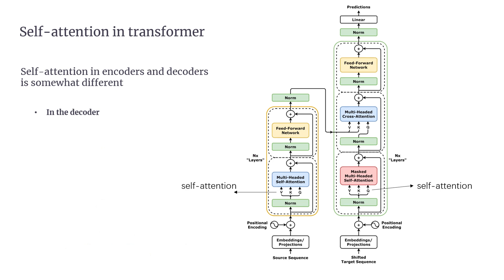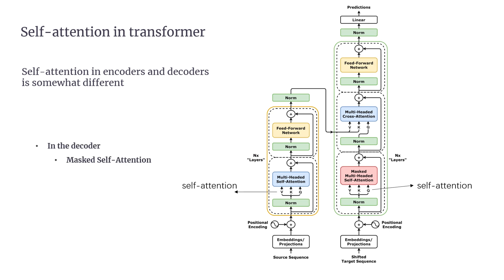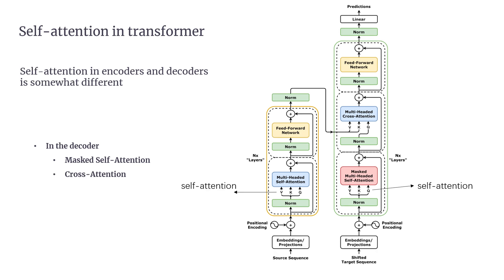In the decoder, self-attention is used in two types of attention mechanisms depending on the phase of prediction. First, masked self-attention: this prevents the model from looking ahead at future tokens. When predicting the next word, a token can only attend to itself and previous tokens, ensuring the model doesn't cheat by peeking at the future. Second, cross-attention: after processing masked self-attention, the decoder attends to the encoder's output — this is encoder-decoder attention, which allows the decoder to focus on specific parts of the input sequence while generating the output.